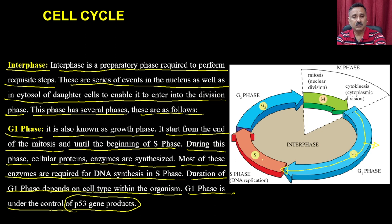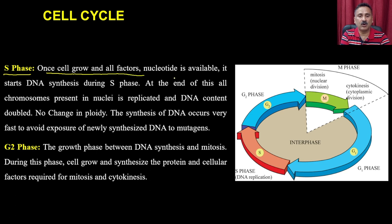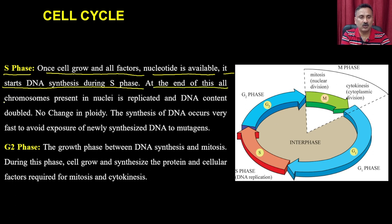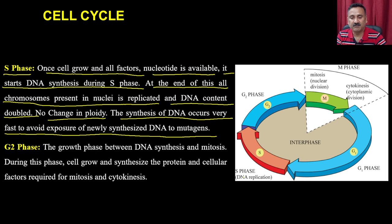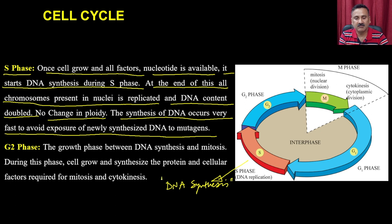Then we enter the S phase. The cell grows and all necessary nucleotides become available. DNA synthesis begins during the S phase. At the end of S phase, all chromosomes in the nucleus are replicated and the DNA content is doubled, with no change in ploidy. DNA synthesis occurs very fast to avoid exposure of newly synthesized DNA to mutation.